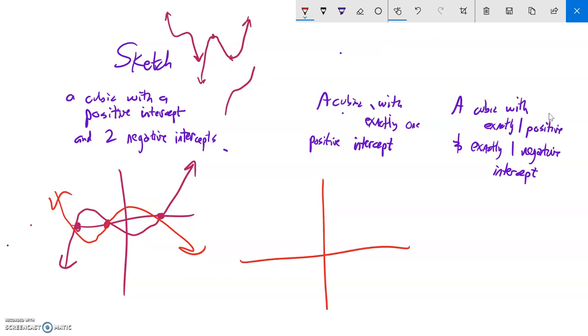Next one, a cubic with exactly one positive intercept. So just the one. That means if it's going to have some curves in it, it's going to happen not near the x-intercept.